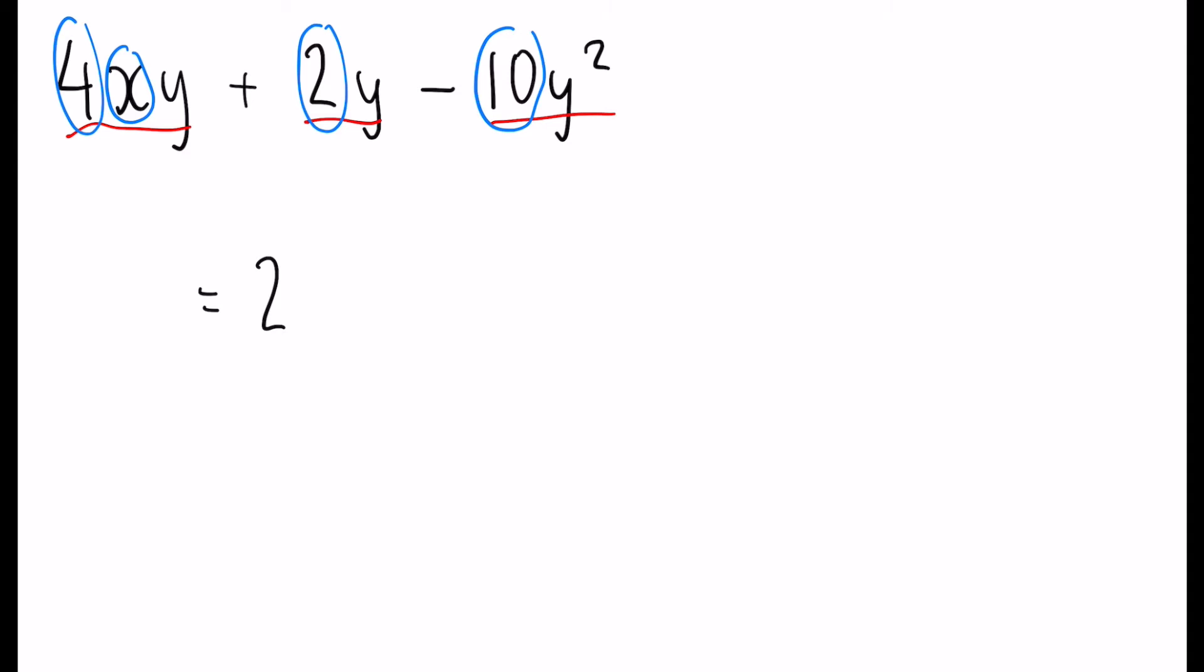To be able to put something on the outside of the bracket, you have to have that letter in every single term. But you can see here, we don't. However, we do have a y there, a y there, and two y's here. So we can, in fact, take out one y from all of those. So 2y goes on the outside of that bracket.